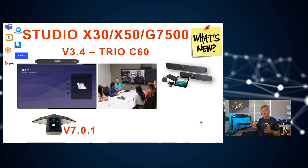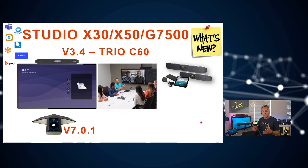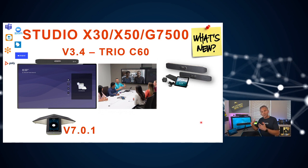There was also an update for the TRIO C60. In combination with the X30 and X50, we got a new certified Teams version: 701. Good to be aware of that new qualified version. The interface when paired with the X30 and X50 is still the virtual remote on the C60, but as I understand, Microsoft and Poly are working to update that interface in the future — adding calendaring, join meeting, etc. This is something in progress.